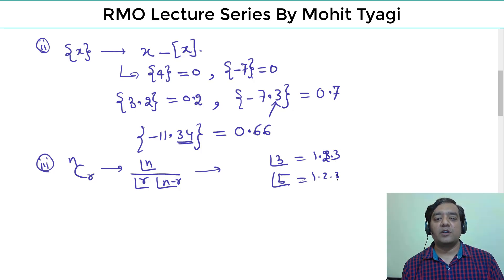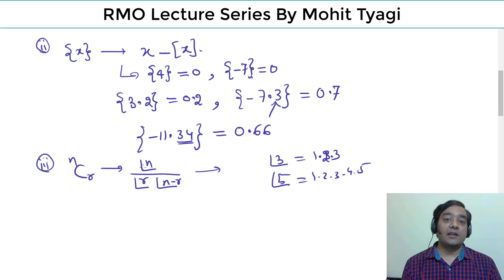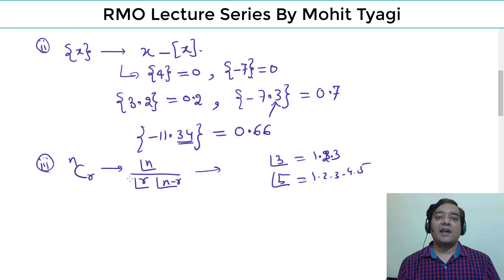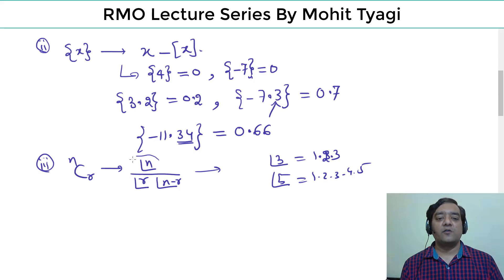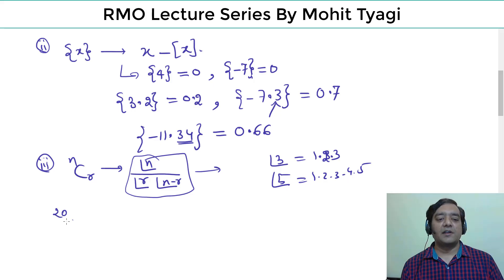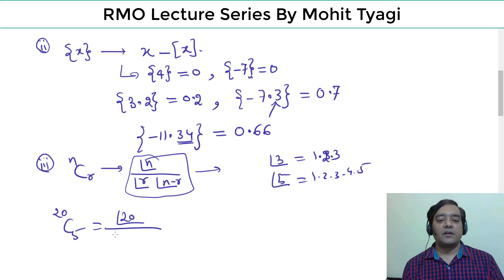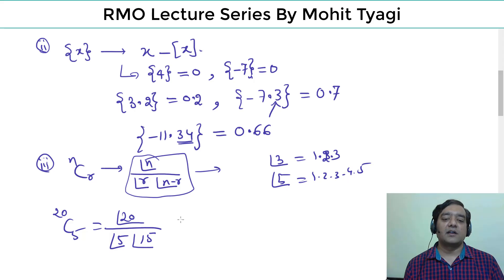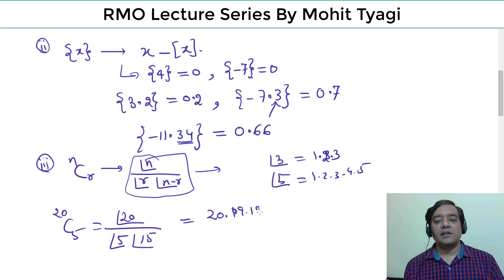Factorial of n is the product of all natural numbers up to n: 1×2×3×4×5 and so on. So nCr = n! / (r! × (n−r)!). For example, 20C5 = 20! / (5! × 15!) which can also be written as (20×19×18×17×16) / 5! — we write the top 5 terms from 20 downward.